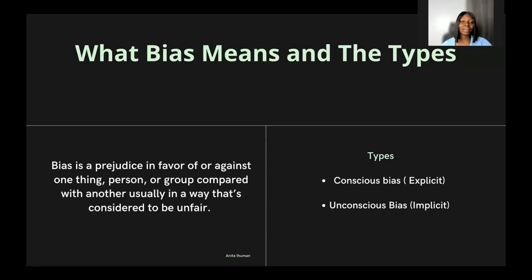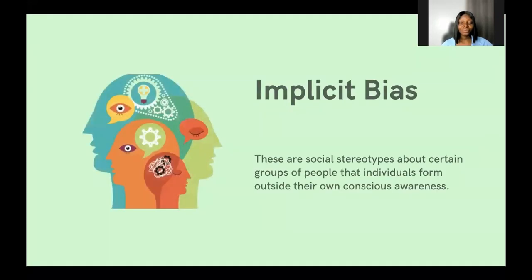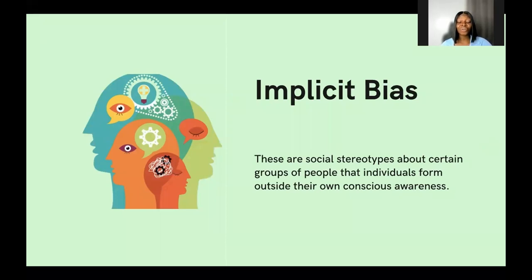There are two types of bias: conscious bias, also known as explicit bias, and unconscious bias, otherwise known as implicit bias. Implicit bias refers to social stereotypes about certain groups of individuals that have been formed based on our experiences, our past, and our origins. These stereotypes affect certain groups of persons outside of our own consciousness — we do it without even being aware of the actions we take sometimes.